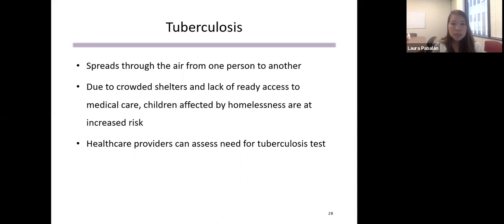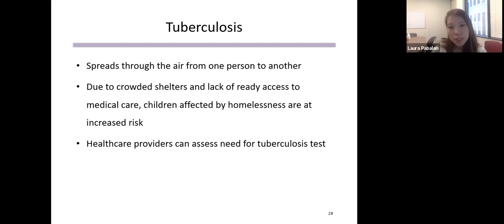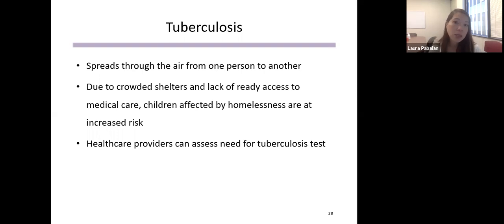Tuberculosis is a disease caused by bacteria that can spread through the air and mainly affects the lungs, but can also affect other organs like the brain, spine, and kidneys. Homeless shelters are considered a high-risk setting because of crowding and lack of ready access to medical care. People are also at risk if they've immigrated from a country with high TB risk, including Latin America, Africa, and Asia. Children under five have increased risk of developing tuberculosis after exposure. Healthcare providers can assess the need for TB testing and provide screening in the office.